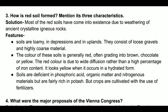How is red soil formed? Mention its three characteristics. Solution: Most red soils have come into existence due to weathering of ancient crystalline igneous rocks. The soils are loamy in depressions and plains, consisting of loose gravels and highly porous material. The color of these soils is generally red, often grading into brown, chocolate or yellow.